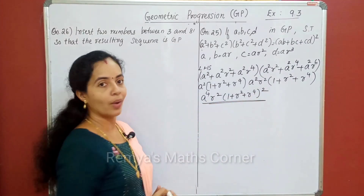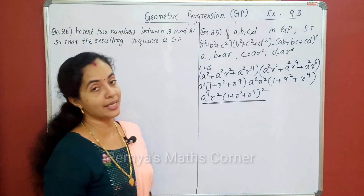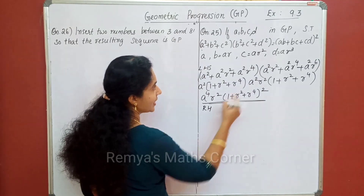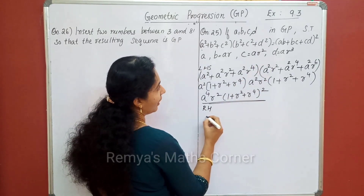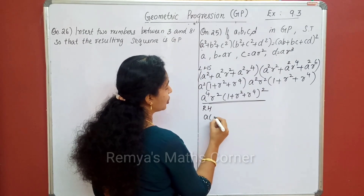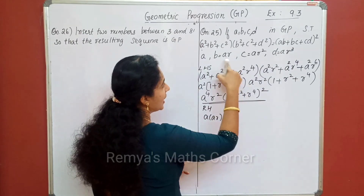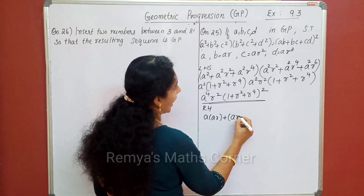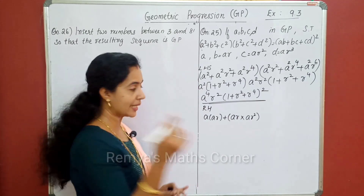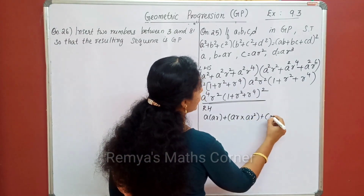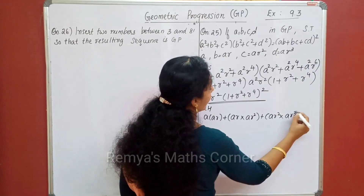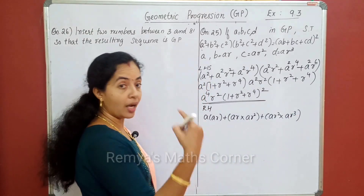Now, r square is right. Left hand side is left. Now, right hand side is separate. Right hand side is a product. A, B is a product. A into ar plus bc. bc, a, r, a, r square. So, bc. This is c, d. c, d. c, d — c, r, a, r square, into d, a, r raised to 3. This is the whole square.